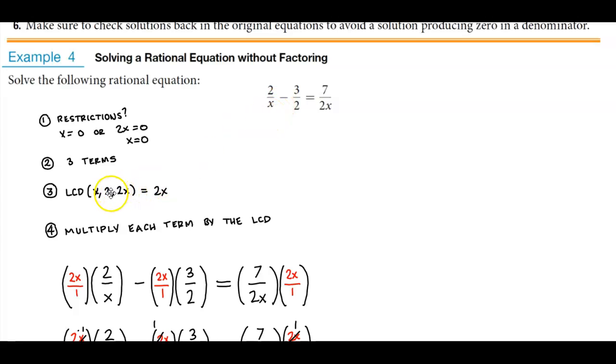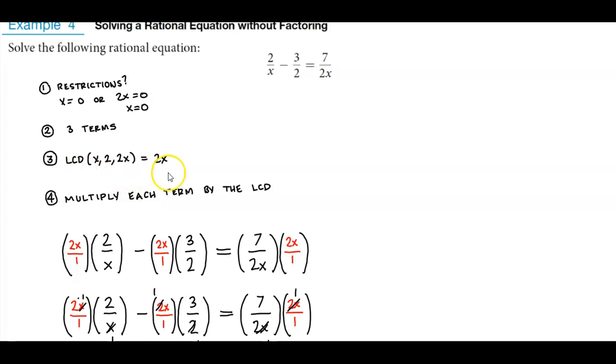Well, we can see that they have a 2 in common, so we know that 2 is part of the LCD. And we can see that two of them have an x in common, so x has to be included in the LCD. So the LCD is 2x.